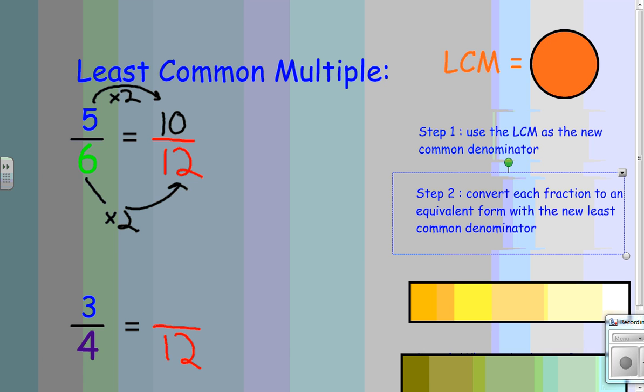On the bottom, we have four times three equals twelve. So, we will also do the same to the numerator to form the new numerator of nine.